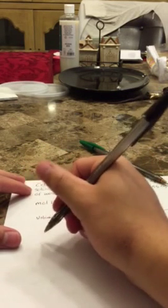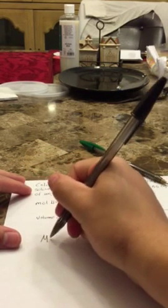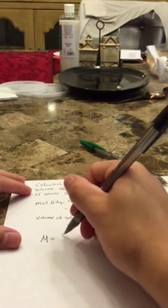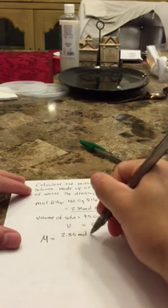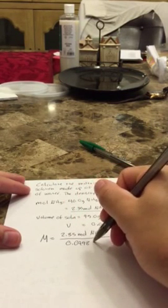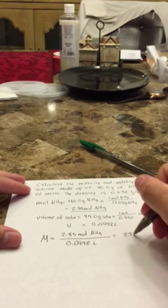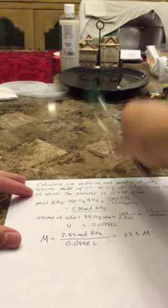And now we have more than enough to calculate our molarity, which is big M. Remember, big M is equal to 2.35 moles NH3 over 0.0998 liters. And we get a molarity of 23.5 molar. And that is something we can box in, because that's an answer.